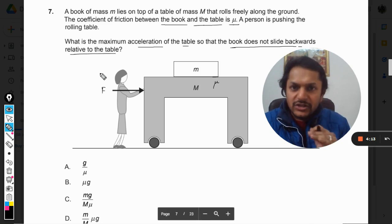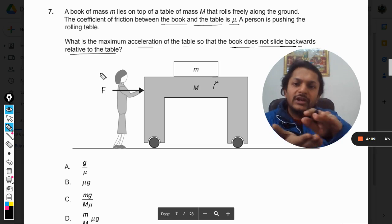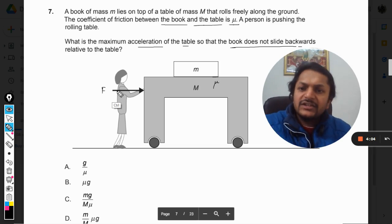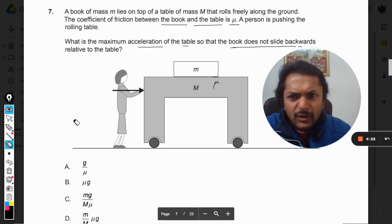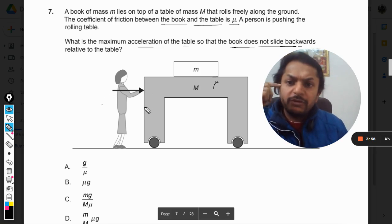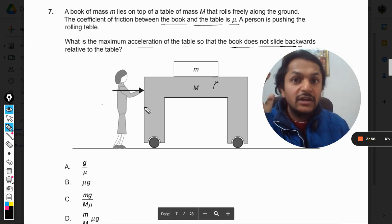Obviously, if there is a force F, we are not getting into F now—we are directly going into acceleration because it will be much easier for us. Otherwise the question will become difficult. Let's say this mass manages to move with acceleration a.